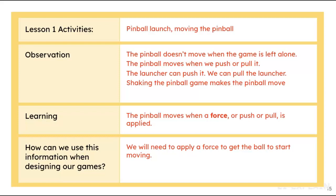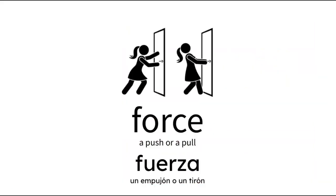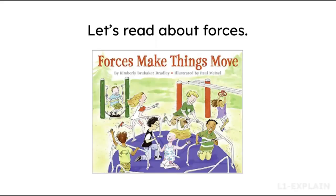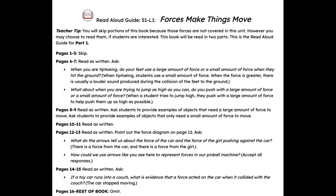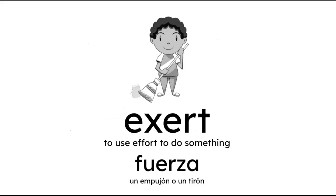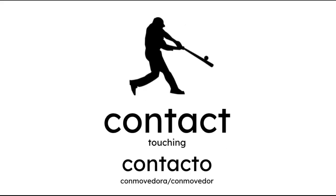Use the discussion to create the Lesson 1 summary chart. From the discussion, students should understand that they will need to apply a force to get the ball to start moving. During the discussion, you can post and discuss the Force vocabulary card. You'll then introduce the book Forces Make Things Move. Use the Read Aloud guide to ask students questions and continue the summary chart discussion. During the discussion, you can post and discuss the Exert vocabulary card and the Contact vocabulary card.